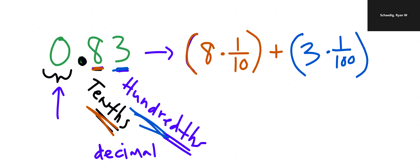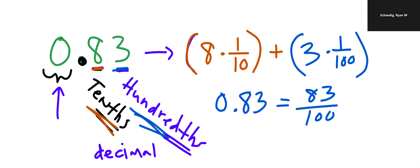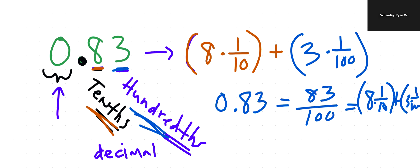So the key difference here: before we were just saying 'eighty-three hundredths,' but now we're breaking it down even closer — eight times one-tenth plus three times one-hundredth. This is why this skill is so important, because it's going to help us connect to further skills. Let's do another one.